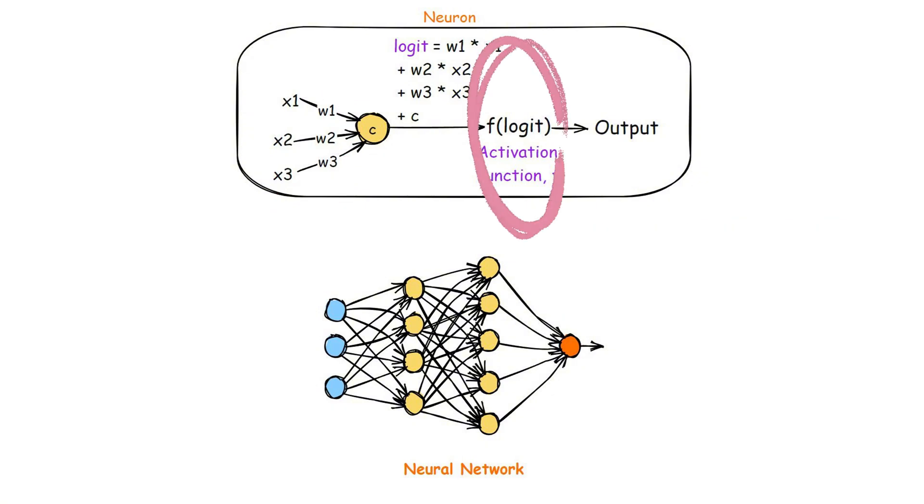Activation functions help neural networks learn from complex data, like images, speech, or text, making them essential for solving both simple and complex problems.